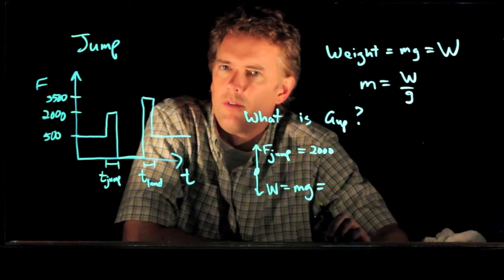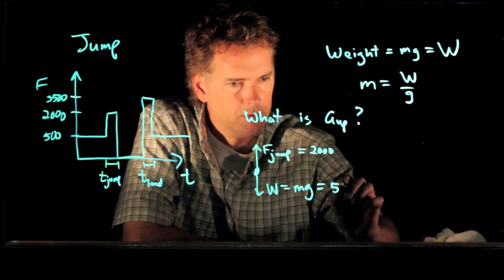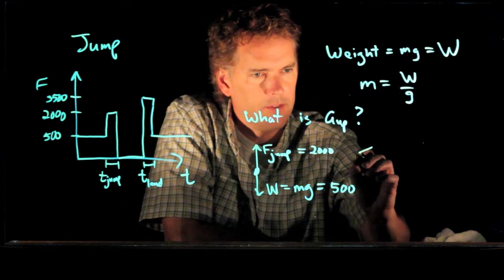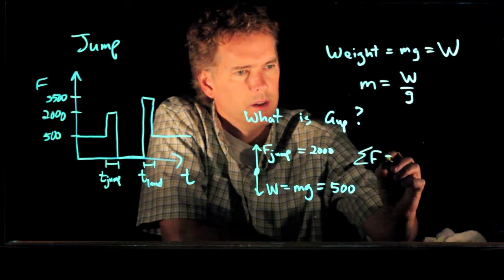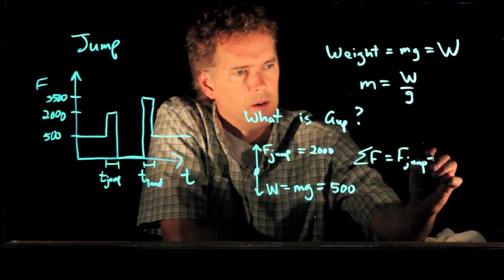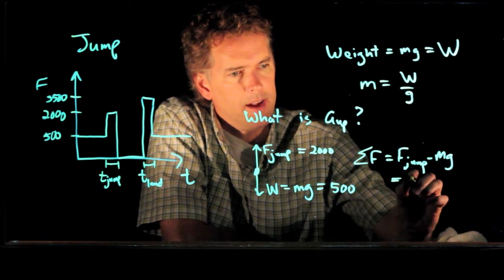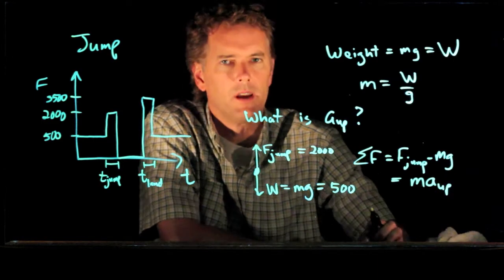Weight is, of course, equal to mg. And we know what that weight is from the earlier numbers, 500 newtons. All right, so now we can write some of the forces in the vertical direction is what? F jump minus mg. And all of that has to be equal to the mass times the acceleration going up.